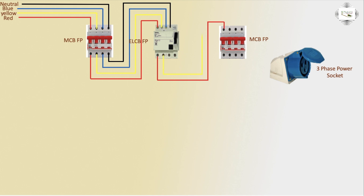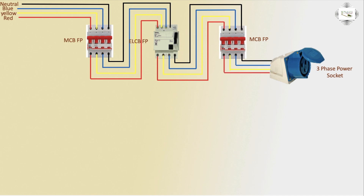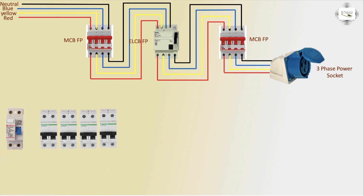The ELCB to MCB connection uses yellow for second phase, blue for third phase, and black for neutral. The outlet to socket connection uses the STDF line. A DP MCB (double-pole circuit breaker), one piece, and one ELCB are used for this socket connection.